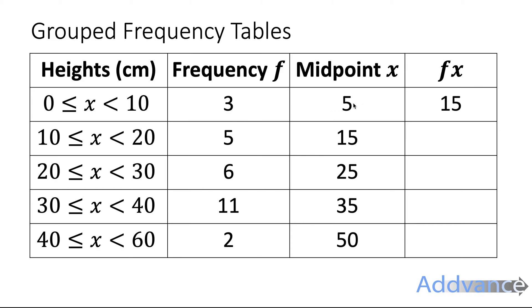3 times 5 is 15. 5 times 15 is 75. 6 times 25 is 150. 11 times 35, you can do it on your calculator, it's 385. And 2 times 50 is 100.